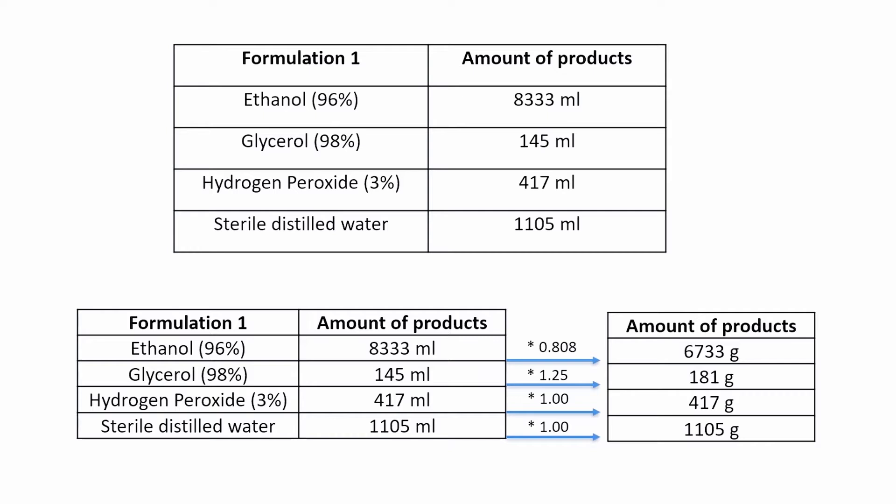This short video will describe the procedure for creating a disinfecting solution using the first formula. Regarding the one based on isopropyl alcohol, please refer to the attached document. For example, here is a recipe formulated by the World Health Organization for 10 liters of product: 8,333 milliliters of ethanol, 417 milliliters of hydrogen peroxide, 145 milliliters of glycerin, and 1,105 milliliters of distilled water.